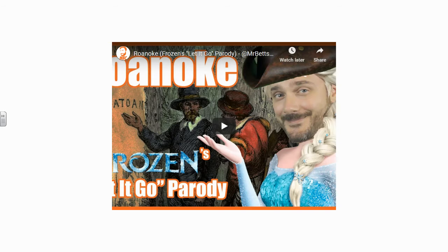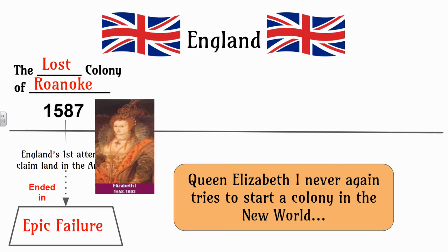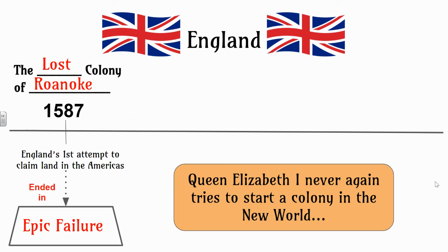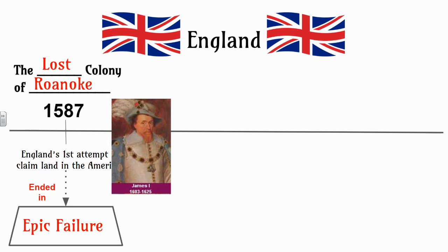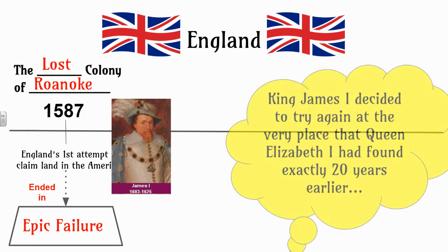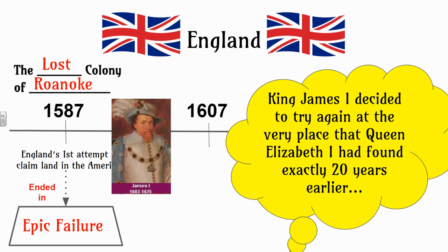I will post a link to the Roanoke song in Google Classroom so you can watch it on your own time. The Queen of England during the story of the lost colony of Roanoke was Queen Elizabeth I, and the failure at Roanoke was too much for her — she never tried again. But she does die, and the person that takes over as ruler of England, King James I, realizes the Queen was onto something and decides to try again to claim land in the Americas.